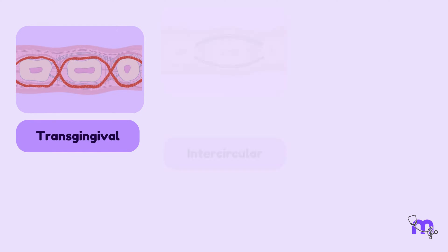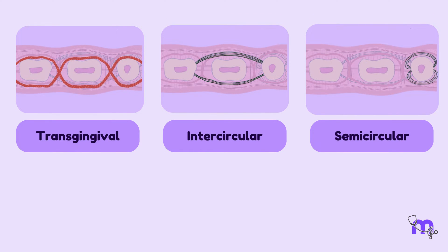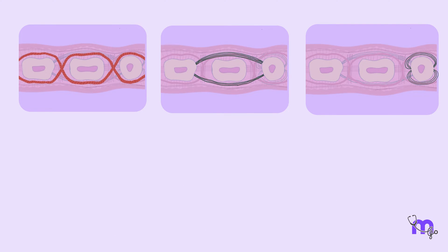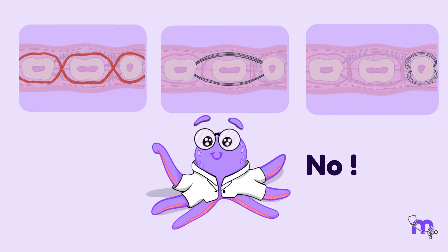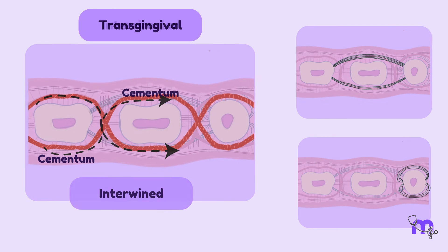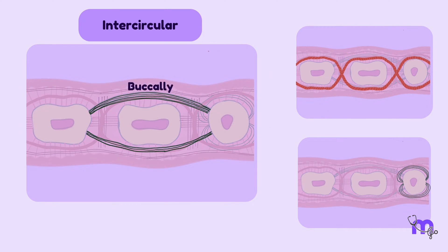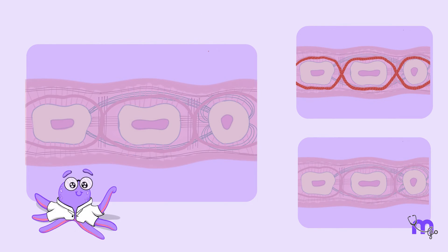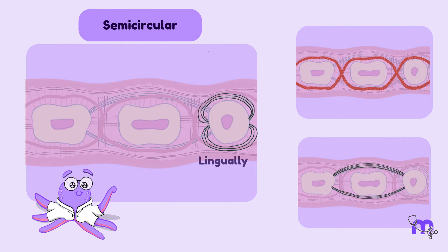At this point, you may be thinking: aren't transgingival, intercircular, and semicircular fibres the same? The answer is no. While transgingival fibres are linear — initiating from one tooth's cementum and merging with another's — intercircular fibres bifurcate buccally and lingually and merge into the cementum of the adjacent tooth. On the other hand, semicircular fibres split lingually and buccally, concluding in the same tooth's cementum. Quite a difference.